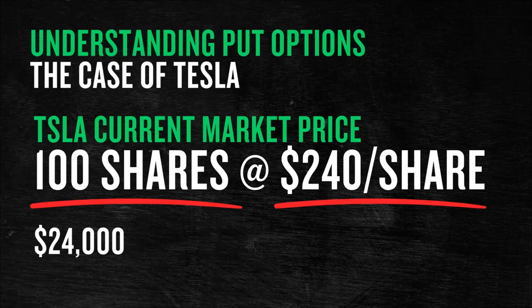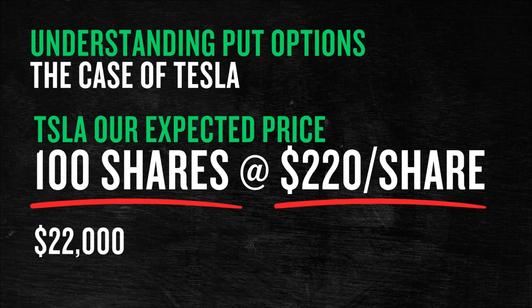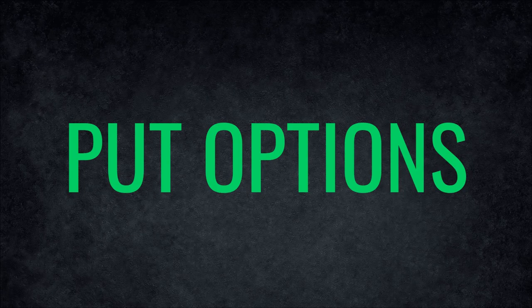At $240 per share, 100 shares of Tesla will cost us $24,000. At $220 per share, the same will cost us only $22,000 — that saves us as much as $2,000. But how are we going to do that? That is where put options come in. Options are sold in contracts; one contract holds 100 shares.